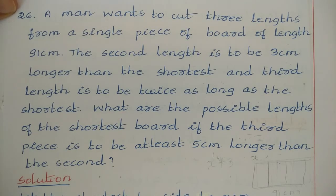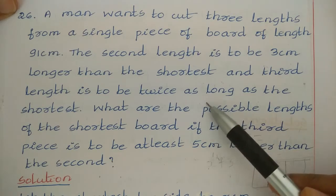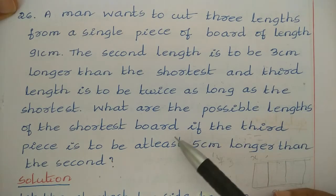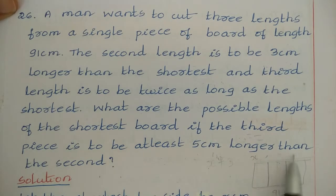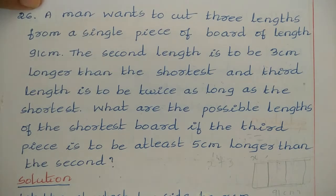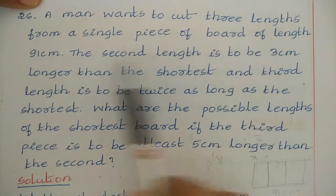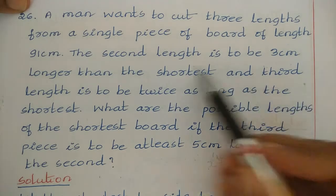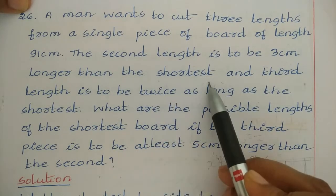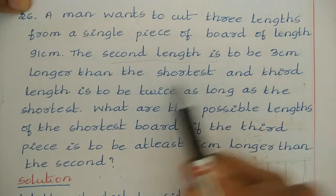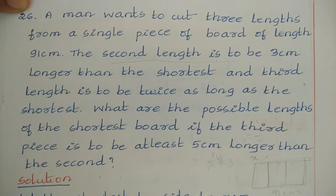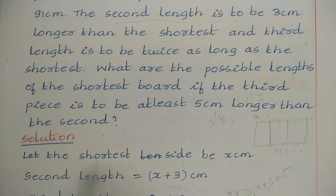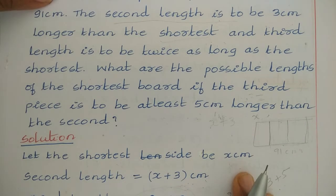Question 26: A man wants to cut three lengths from a single piece of board of length 91 cm. The second length is to be 3 cm longer than the shortest, and the third length is to be twice as long as the shortest. What are the possible lengths of the shortest board if the third piece is to be at least 5 cm longer than the second?